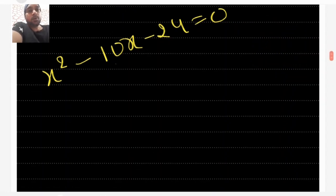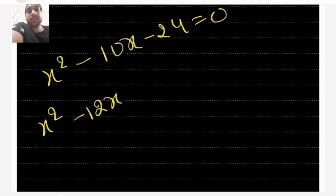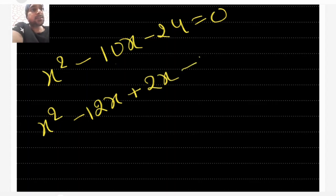Now this will be written as x² - 12x + 2x - 24 = 0.